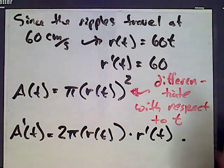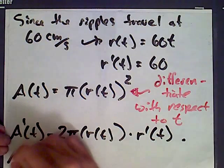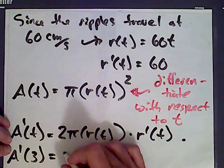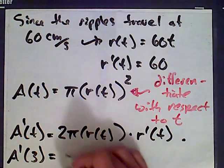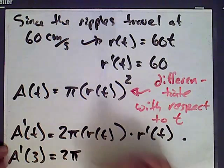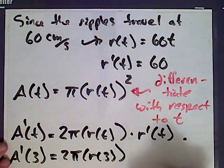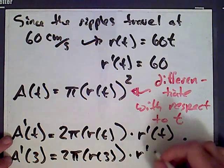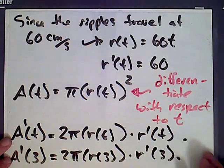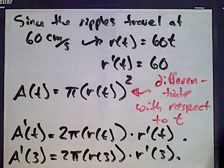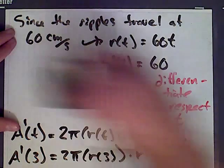So what's A' at 3 seconds? It's 2 pi times r(3). So the radius at time 3 times r'(3). So the rate the radius is changing at 3 seconds. We can plug all these values in.